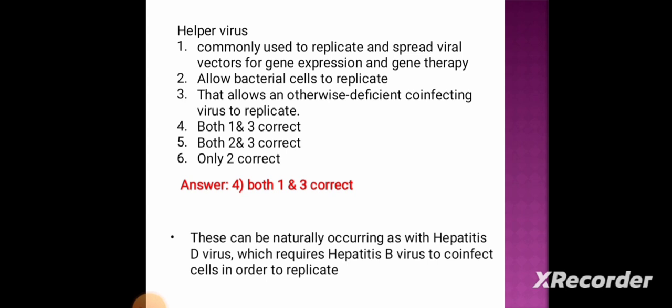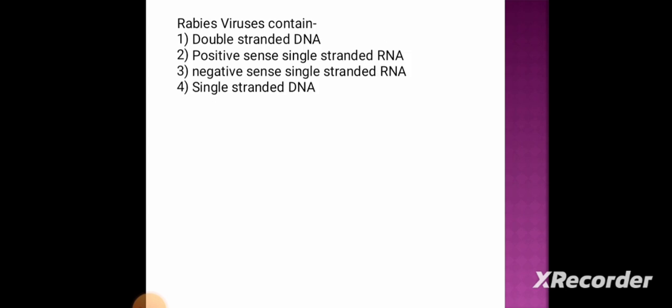The helper virus can be naturally occurring, as with hepatitis D virus, which requires hepatitis B virus to co-infect cells in order to replicate. Next question: rabies virus contains — option 1: double-stranded DNA, option 2: positive-sense single-stranded RNA, option 3: negative-sense single-stranded RNA, option 4: single-stranded DNA. The correct answer is option 3, negative-sense single-stranded RNA.